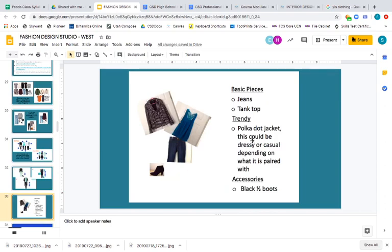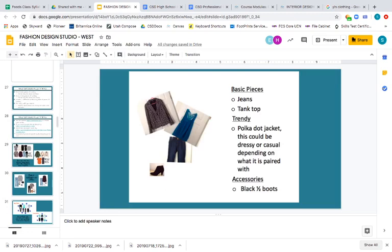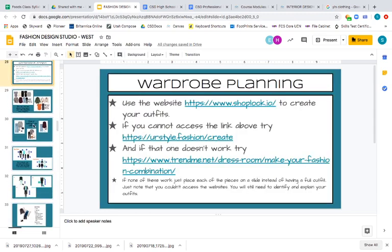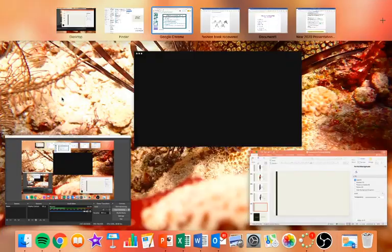So, this is what I expect for your definition. Your basic pieces would be jeans and a tank top. Your trendy would be your polka dot jacket. This could be dressy or casual, depending on what it's paired with. Accessories, labeled as your black half boots. So, what you can do is you can either use the websites that I've linked here, or you can go through on your packet.